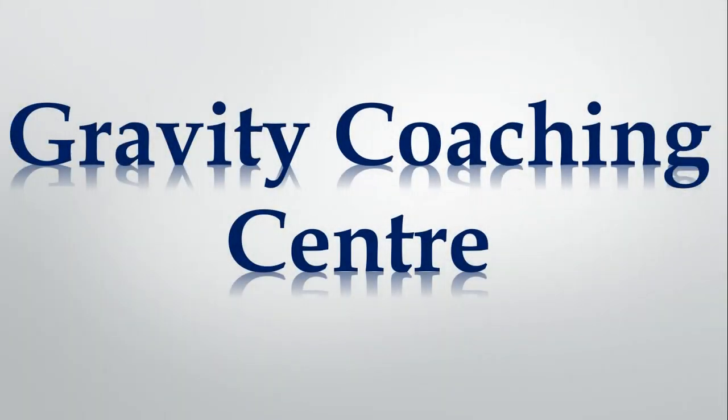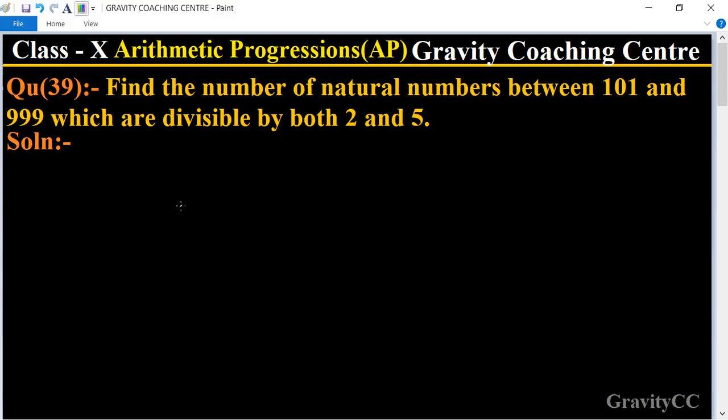Welcome to our channel Gravity Coaching Center, Class 10 chapter Arithmetic Progressions, Question number 39. Find the number of natural numbers between 101 and 999 which are divisible by both 2 and 5.